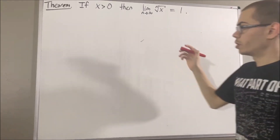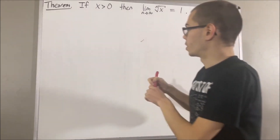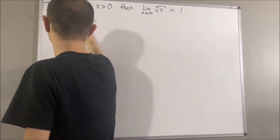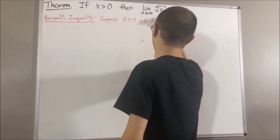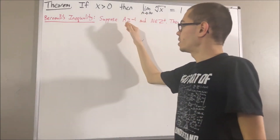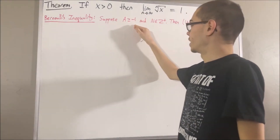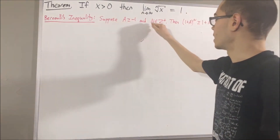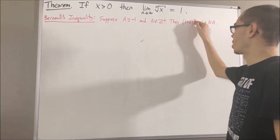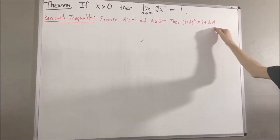Well, we will be using Bernoulli's inequality in the proof, which is as follows. Suppose a is a real number greater than or equal to negative 1, and n is a positive integer. Then, 1 plus a to the power of n is greater than or equal to 1 plus n times a.